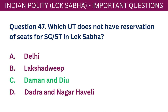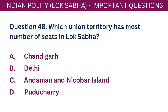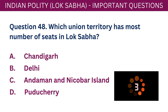Question 48: Which Union Territory has the most number of seats in Lok Sabha? A. Chandigarh. B. Delhi. C. Andaman and Nicobar Island. D. Puducherry. The correct answer is B - Delhi.